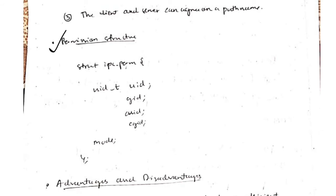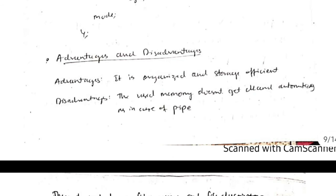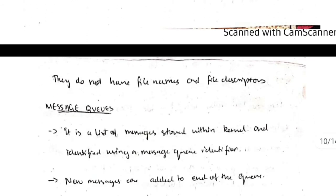This is the structure of XSI IPC which is having the UID, GID, and CUID and CGID. We can specify the mode also. What are the advantages of XSI IPC? It's organized and storage efficient. The disadvantage includes that it doesn't clear the memory automatically in case of a pipe, so there is a wastage of memory, and it doesn't have the file descriptors and file names, so it's hard to handle the XSI.